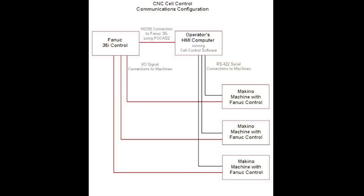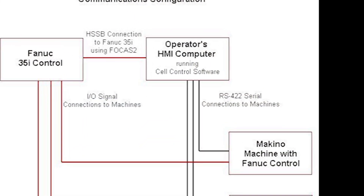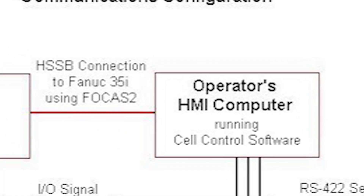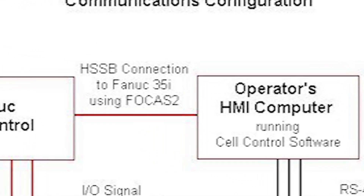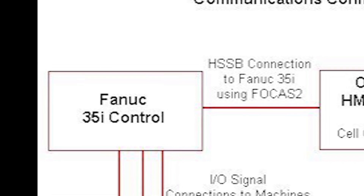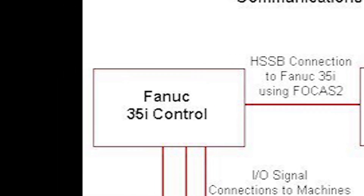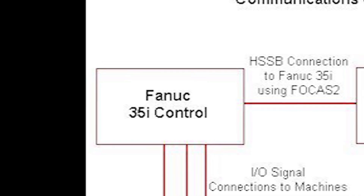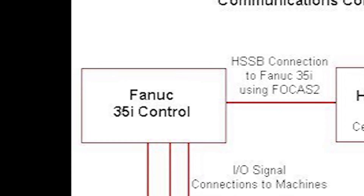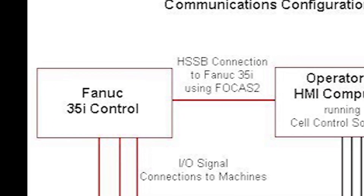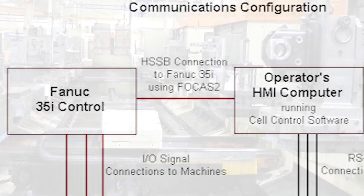In this retrofit, Open Vision Cell Control software communicates with the FANUC 35IB control via HSSB connection using FANUC's FOCUS2 libraries. The FOCUS2 protocol provides robust, high-speed exchange of data between the FANUC 35IB motion controller and the PC.